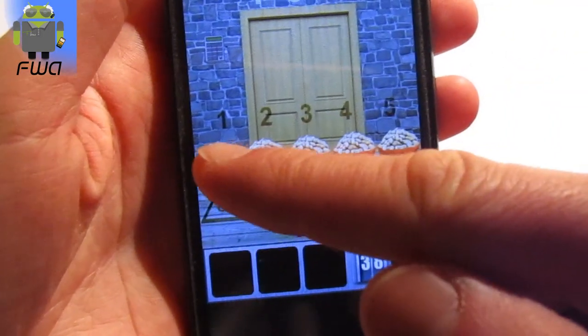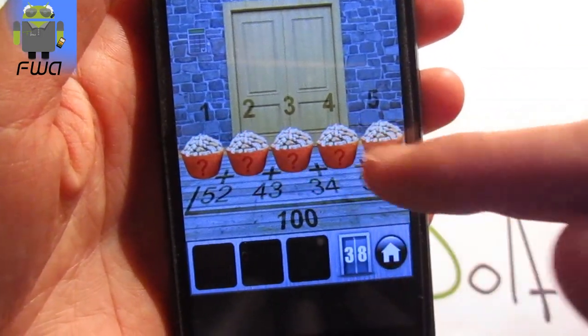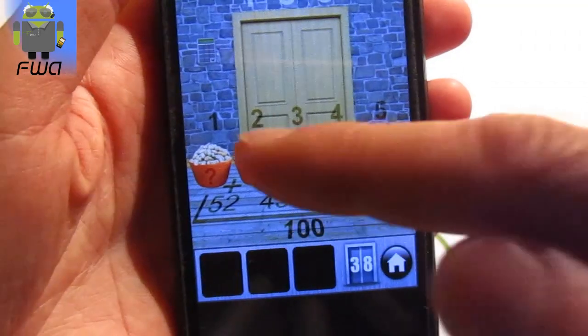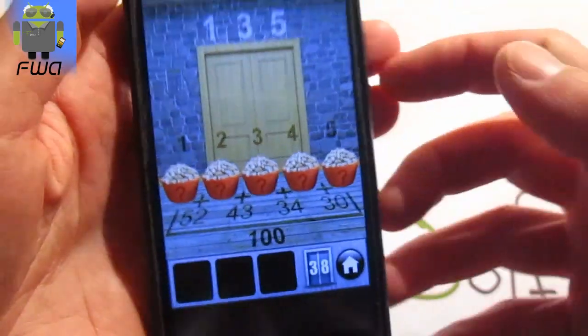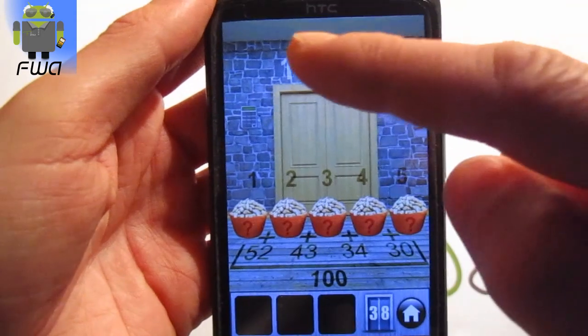And the fourth plus the fifth, 30. The sum of all these is 100, so 1 plus 2 plus 3 plus 4 plus 5 equals 100. And the code is 135.